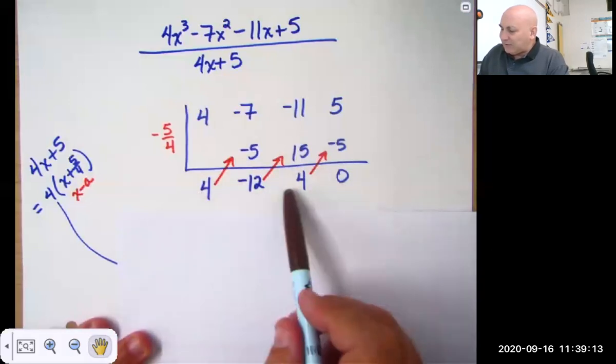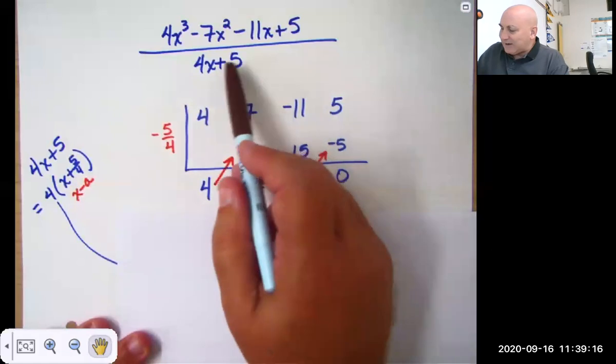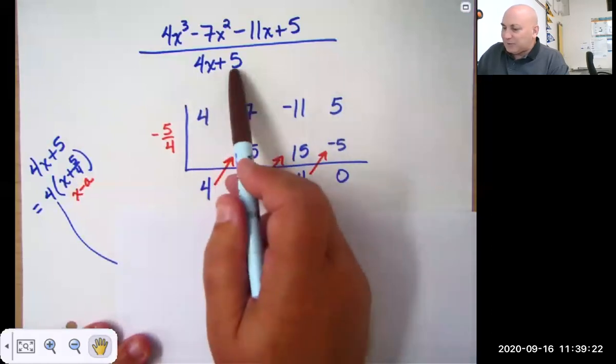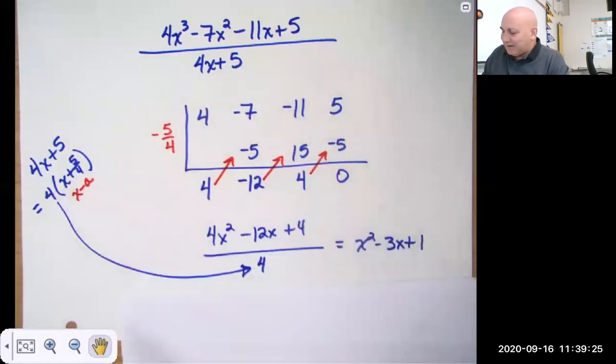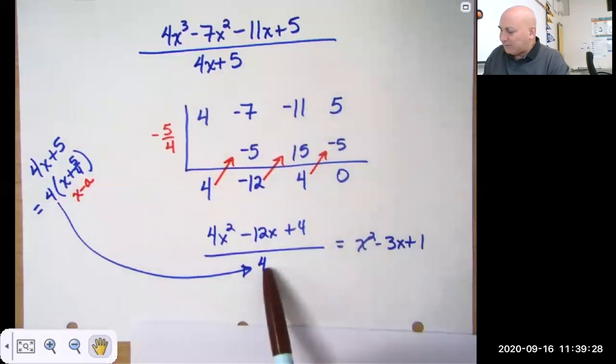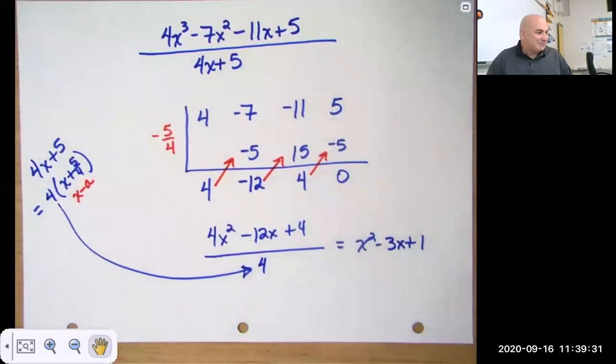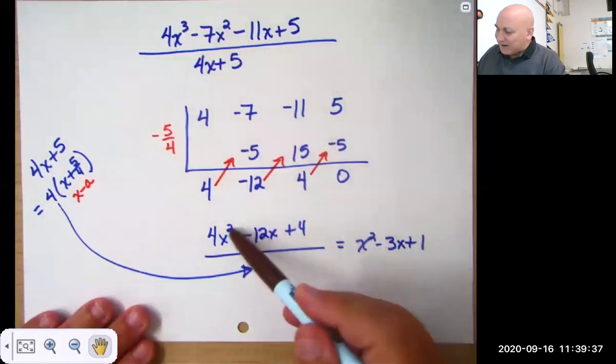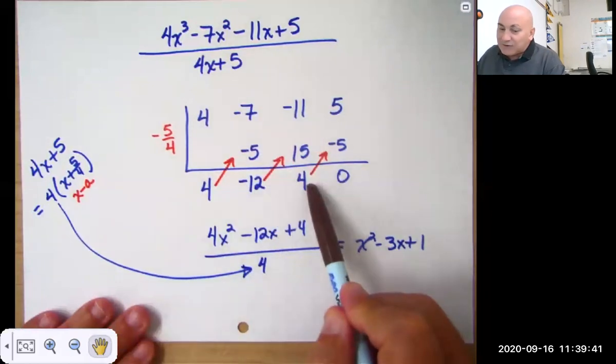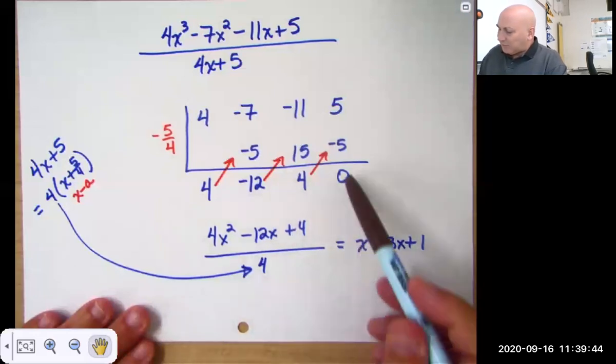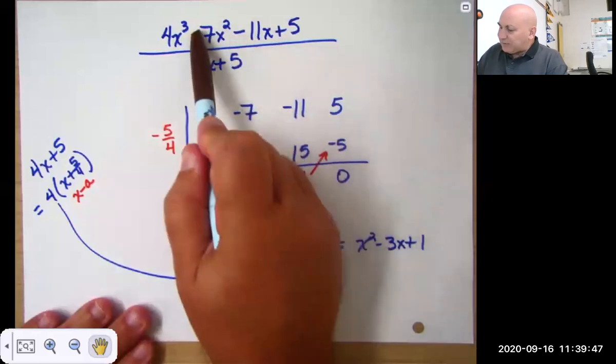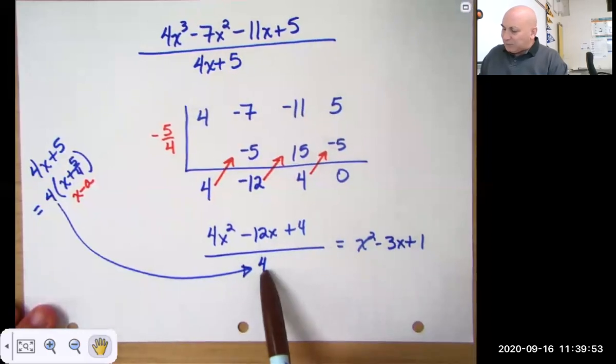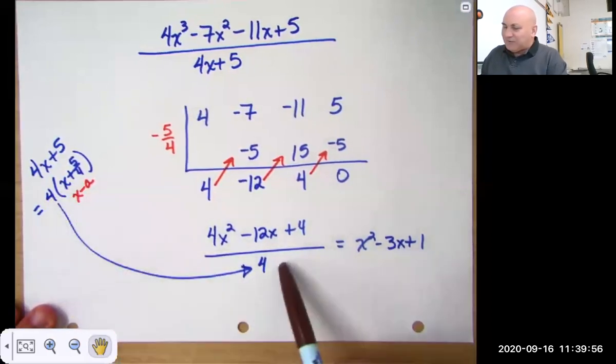But this isn't my final answer. This is what happens if I divided by x plus 5 fourths. I need to divide by 4x plus 5. So you see, I need to divide by this additional 4. So I was making an x cubed divided by an x, I got an x squared. So that's x squared, x, x to the 0, and then a remainder. There was no remainder. So this divided by this gives me this. Why did we have to divide by this 4? You say we multiplied by the 4 here, why are we dividing by the 4?